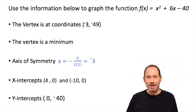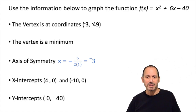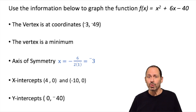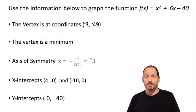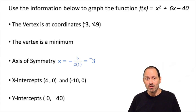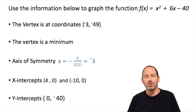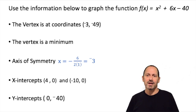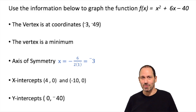We now have all the key features needed to graph the parabola: the vertex at (−3, −49), which is a minimum; the axis of symmetry x = −3; the x-intercepts at (4, 0) and (−10, 0); and the y-intercept at (0, −40). I invite you to pause the video here, try to graph the parabola on your own using these key features, and then resume to compare your answer to what we have next.